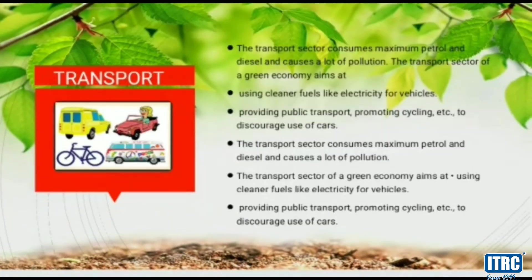The next sector is transport. The transport sector consumes maximum petrol and diesel and causes a lot of pollution. The transport sector of the green economy aims at using cleaner fuels like electricity for vehicles, providing public transport, and promoting cycling. What can we do? Use public transport like buses or trains, walk or cycle when possible, and use electric vehicles if possible.